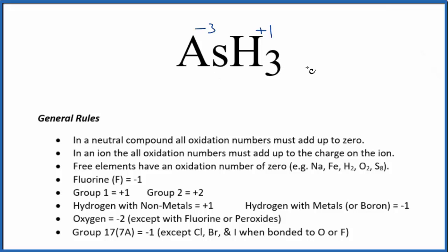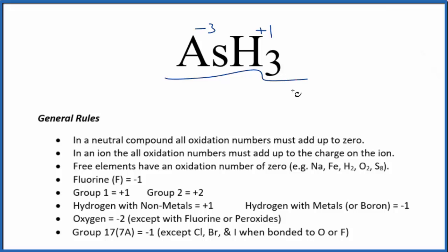Again, in this case, because arsenic is a little more electronegative than hydrogen, the hydrogens would be plus one — we have three of them — so arsenic has to be minus three. This is Dr. B with the oxidation number for ASH3. Thanks for watching.